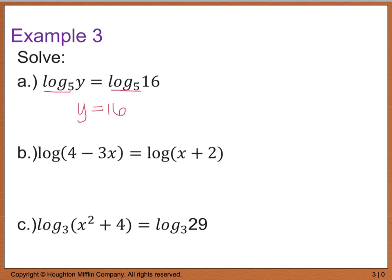For part b, it says log, and if there's nothing there, remember that that's really a base 10 if nothing's written in there. So log base 10 of 4 minus 3x equals log base 10 of x plus 2. Well because both of these have log base of 10, I can then take the rest and set it equal to one another, and then solve for x. So I end up with 2 equals 4x. In other words, x then is equal to 1 half.